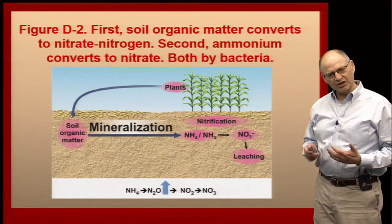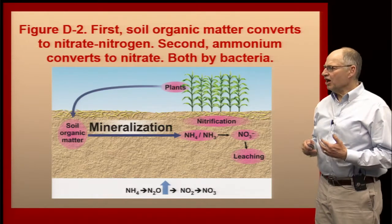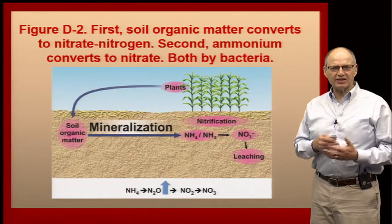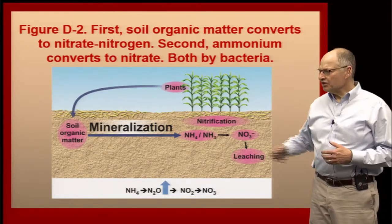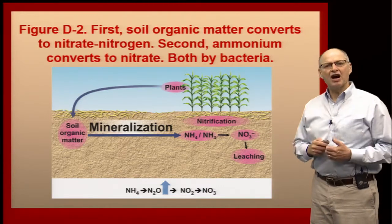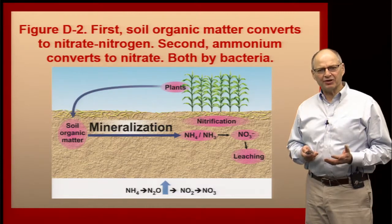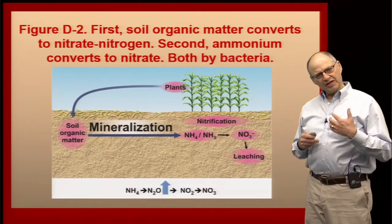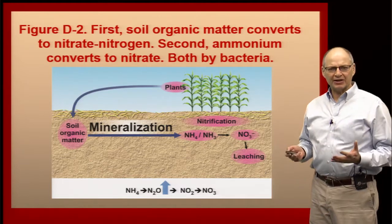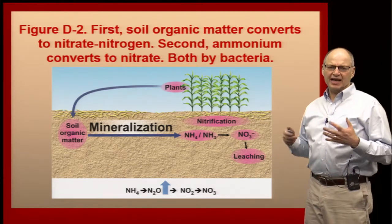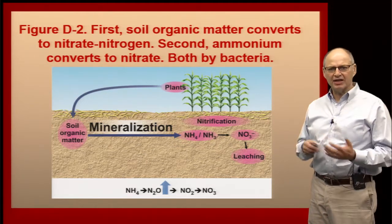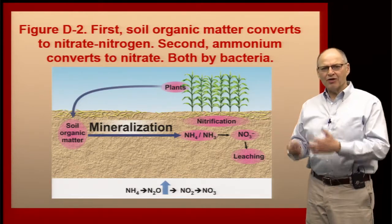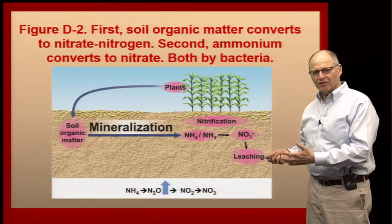The first process we're going to talk about is mineralization. It doesn't really matter where we start on this cycle — the important thing is to know that these processes are going on and what conditions cause them to happen the most. Mineralization is the transference of nitrogen from organic material — whether it's manure, soil organic matter, compost, or dead plant material — where the nitrogen is split off from the organic source. When it's split off, it's in an NH form; whether it's ammonium or ammonia depends on certain conditions. That's the process of mineralization: going to a chemical form from an organic source.